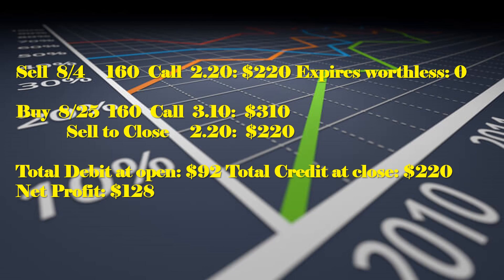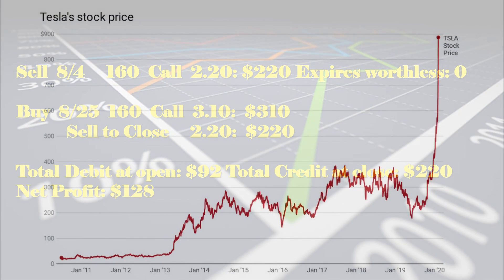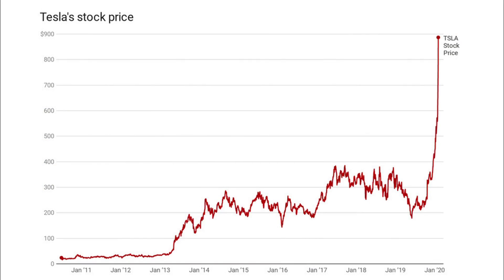Looking at the short position price today, it might be reasonable to assume that in two weeks my long position will be worth right around $2.20, or a total value of $220. So if I now turn around and sell that long position after the short position has expired, I'll be collecting $220, compared to my original cost to open this position of $92. So a little over $100 profit on this position, if the stock price remains below $157.50 at expiration.